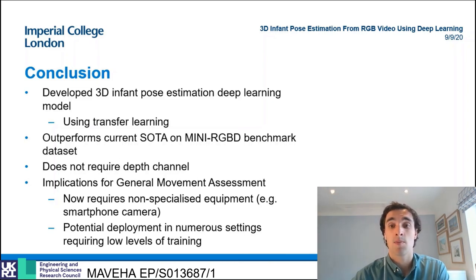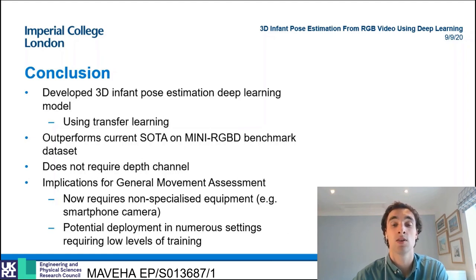The model has outperformed the current state-of-the-art 2D and 3D models on the benchmark mini RGBD synthetic infant dataset. Furthermore, the 3D model presented here does not require a depth channel, unlike the current state-of-the-art random ferns model.